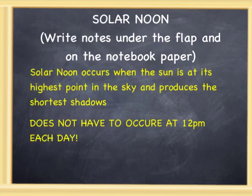Solar noon occurs when the sun is at its highest point in the sky and produces the shortest shadows. The sun is right above a certain point, and the shadows it produces are the shortest they're going to be all day. It's important to know that solar noon does not have to happen at 12 p.m. — it occurs at different points in time every day.